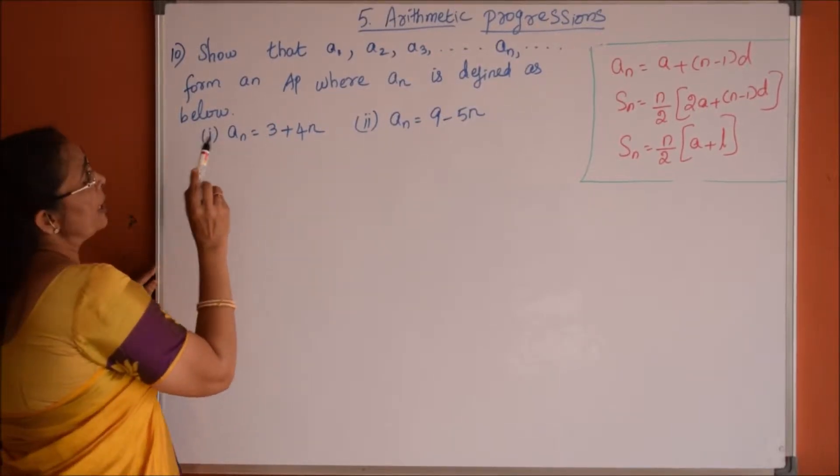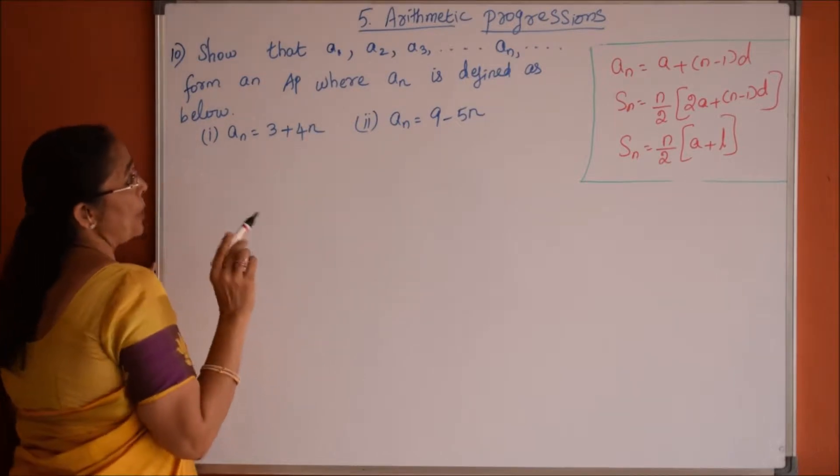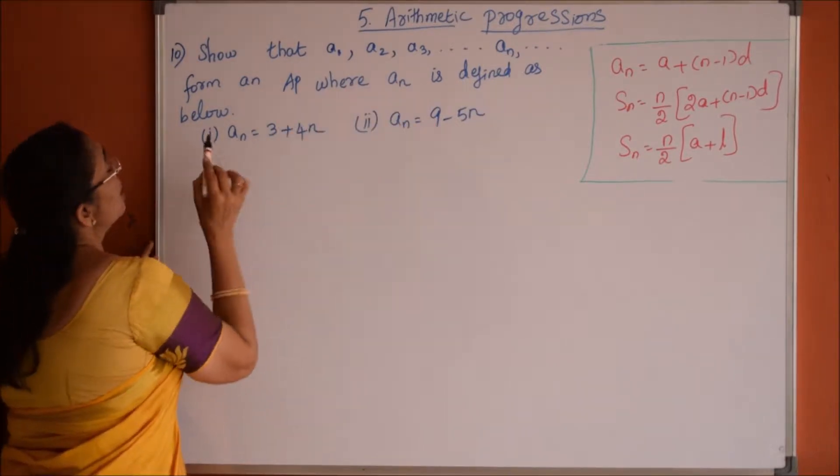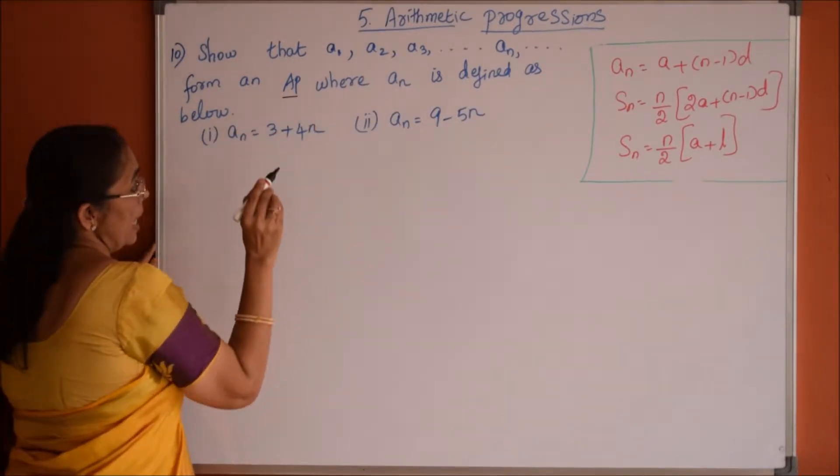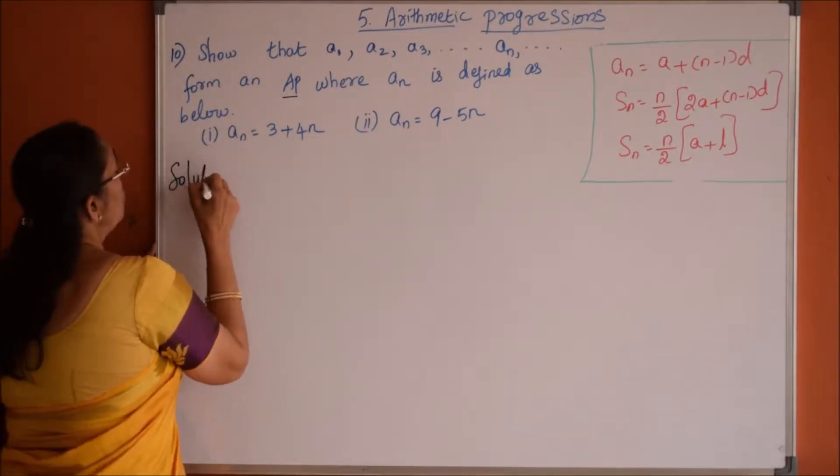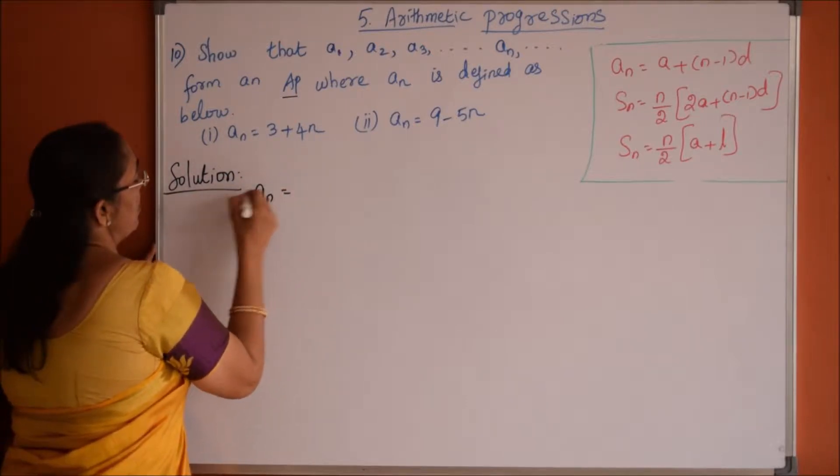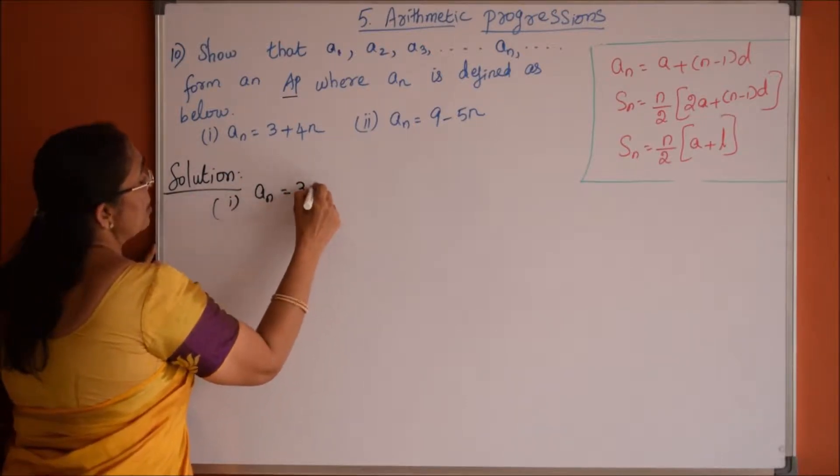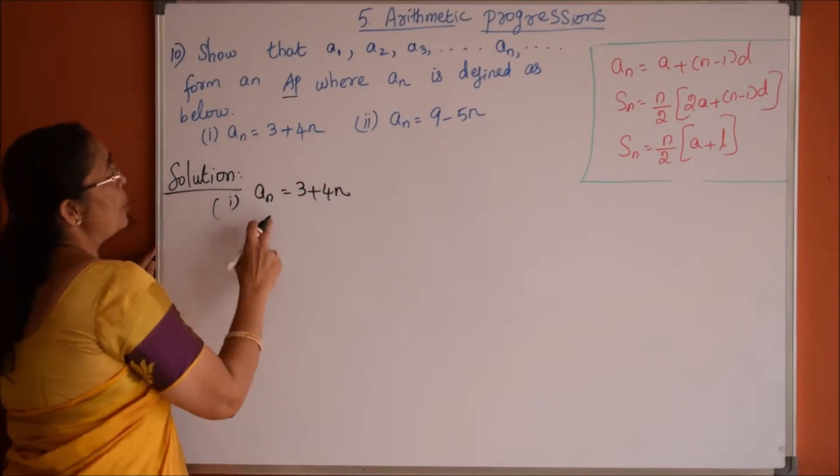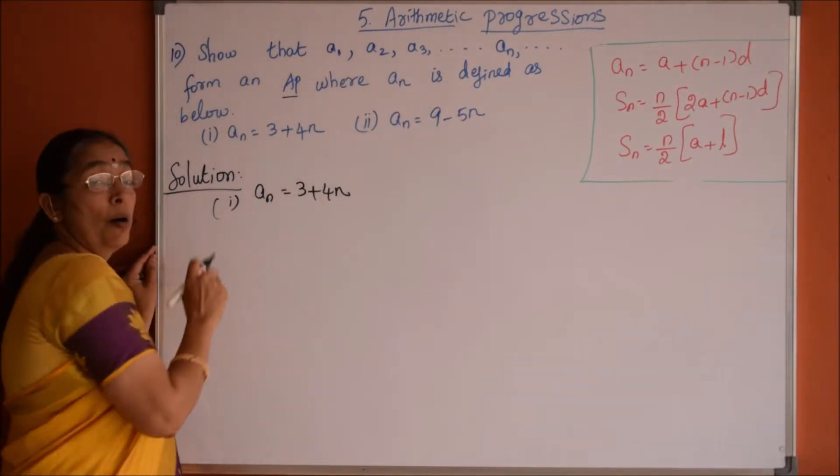10th question: Show that a1, a2, a3, etc. up to a_n form an AP where a_n is defined as below. So 2 bits are there in this. a_n is defined as in the first problem 3 plus 4n. So we have to show for different a1, a2, a3 values this forms an AP.